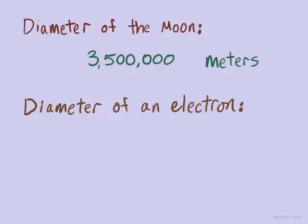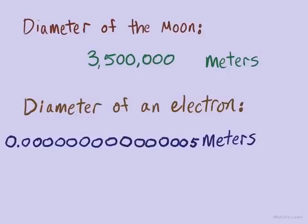And how about the diameter of an electron — one of the tiny particles floating around the nucleus of an atom? Also in meters, the diameter of an electron is about 5 quadrillionths of a meter, or 5 femtometers. These are quantities that do come up in science quite a bit.